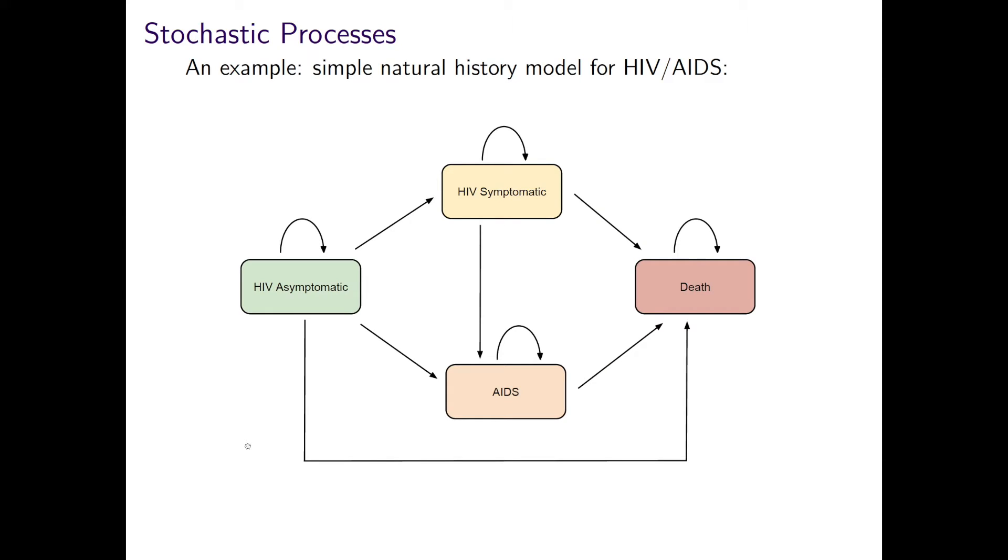Many healthcare processes can be considered as stochastic processes. Take, for example, this simple natural history model of HIV and AIDS, where we have captured the different stages of the disease as a set of clinically defined states.